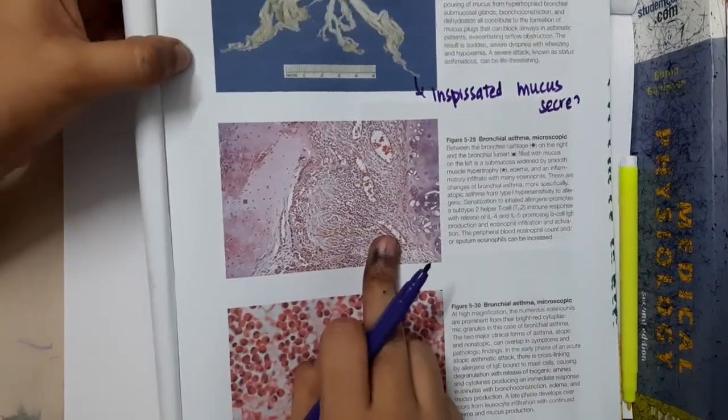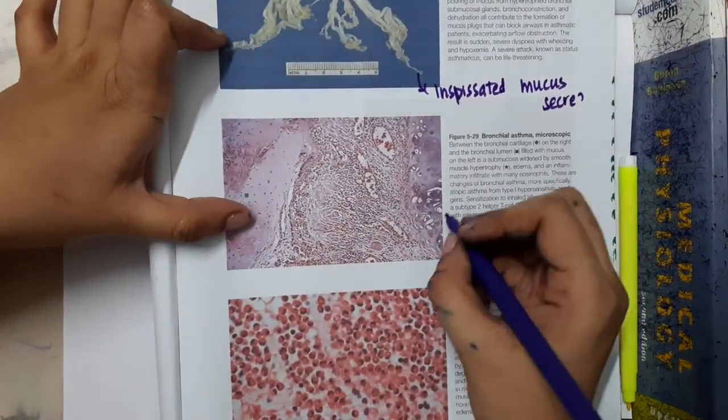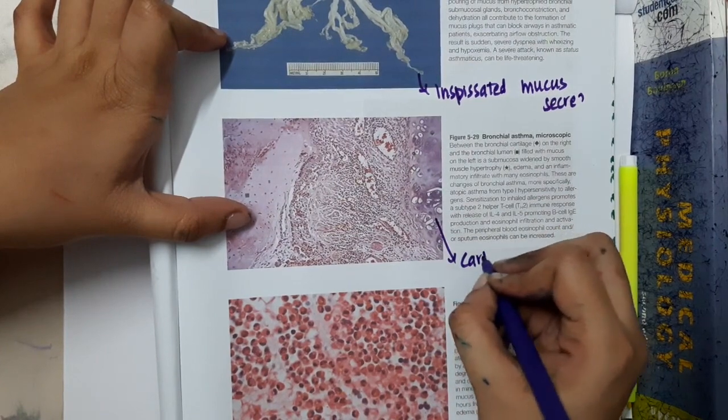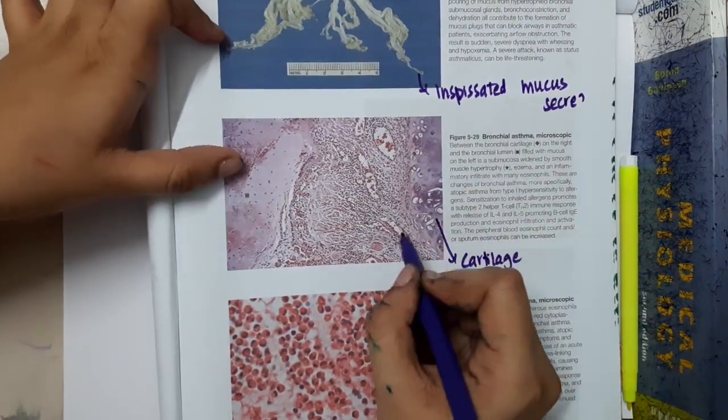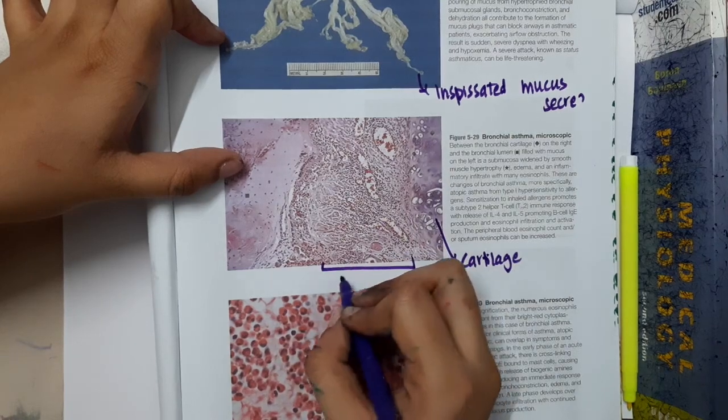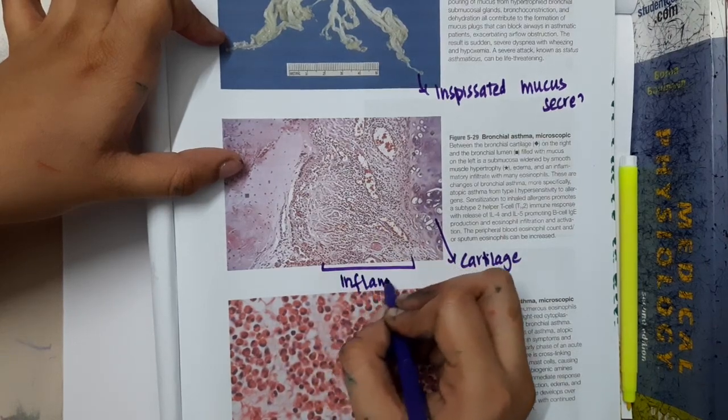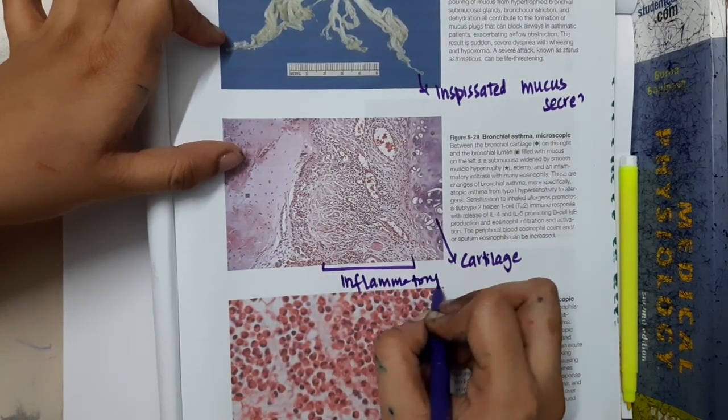If you see the microscopic picture, you can see that this is the cartilage—hyaline cartilage of the bronchi. And here you can see the acute inflammatory reaction.